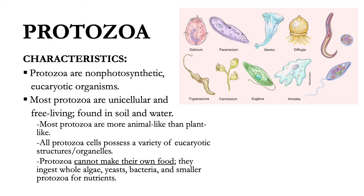Most protozoa are more animal-like than plant-like. All protozoan cells possess a variety of eukaryotic structures and organelles. They do not have chlorophyll and therefore cannot make their own food by photosynthesis. Some protozoa ingest whole algae, yeast, bacteria, and smaller protozoa as their source of nutrients, while others live on dead and decaying organic matter.